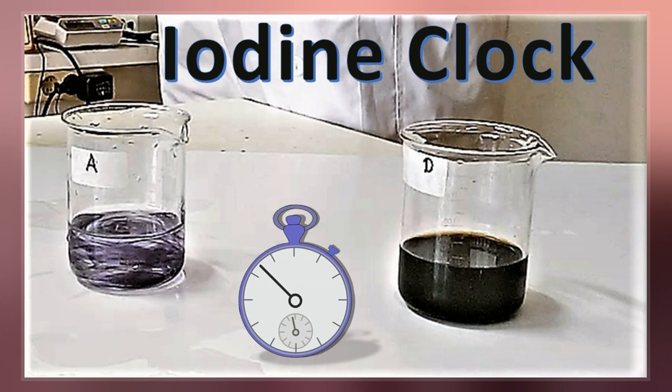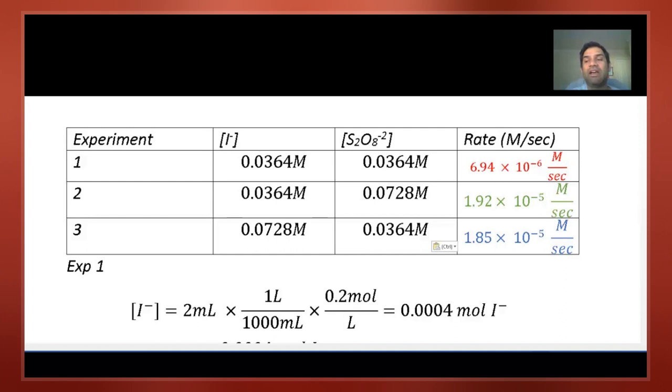In some variations, the solution will repeatedly cycle from colorless to blue and back to colorless, until the reagents are depleted.